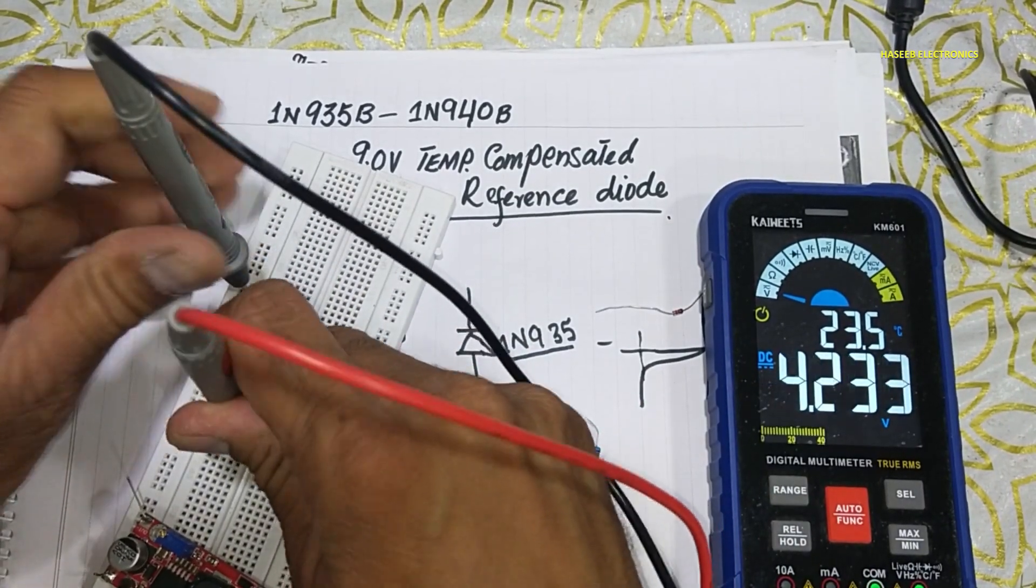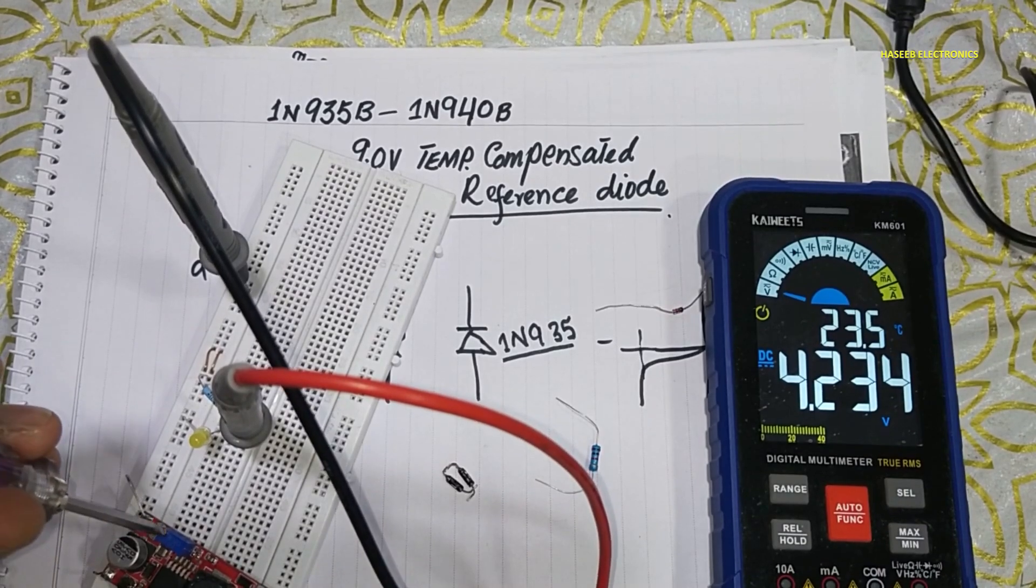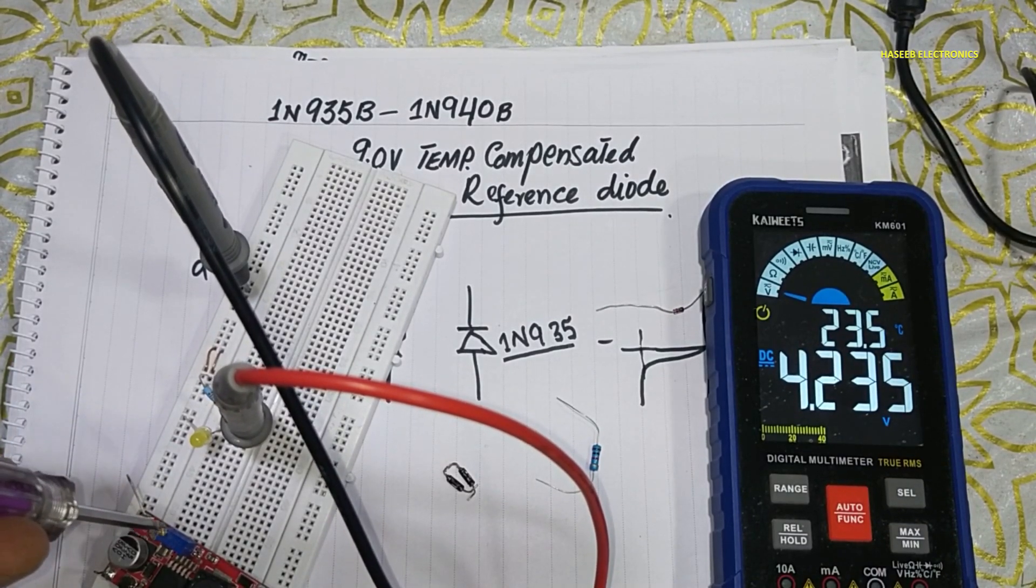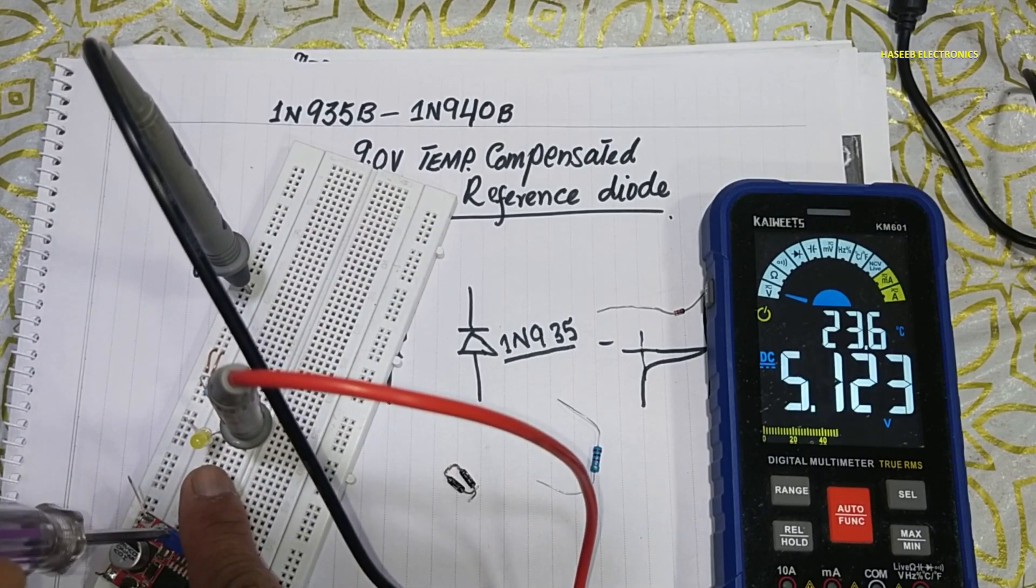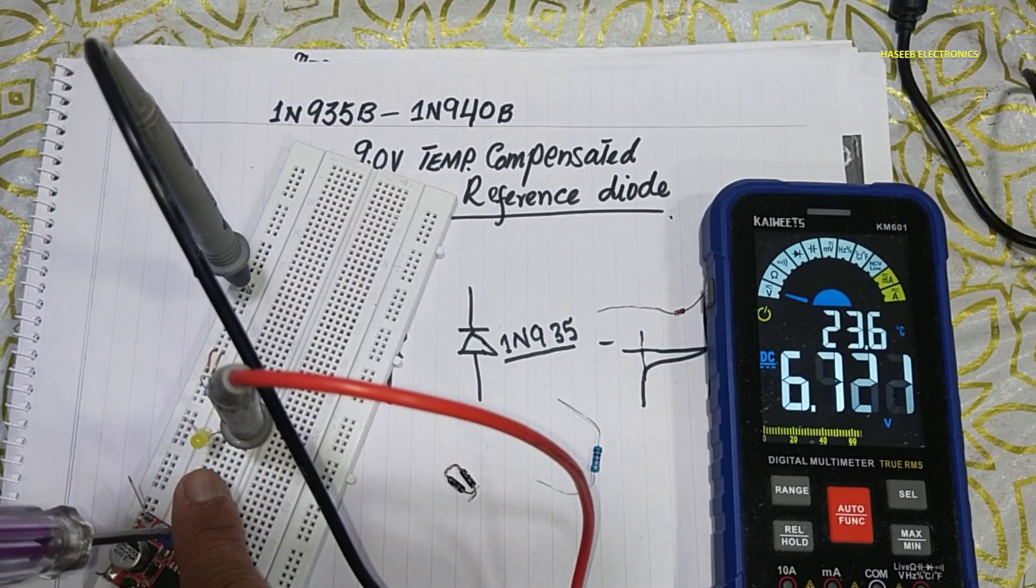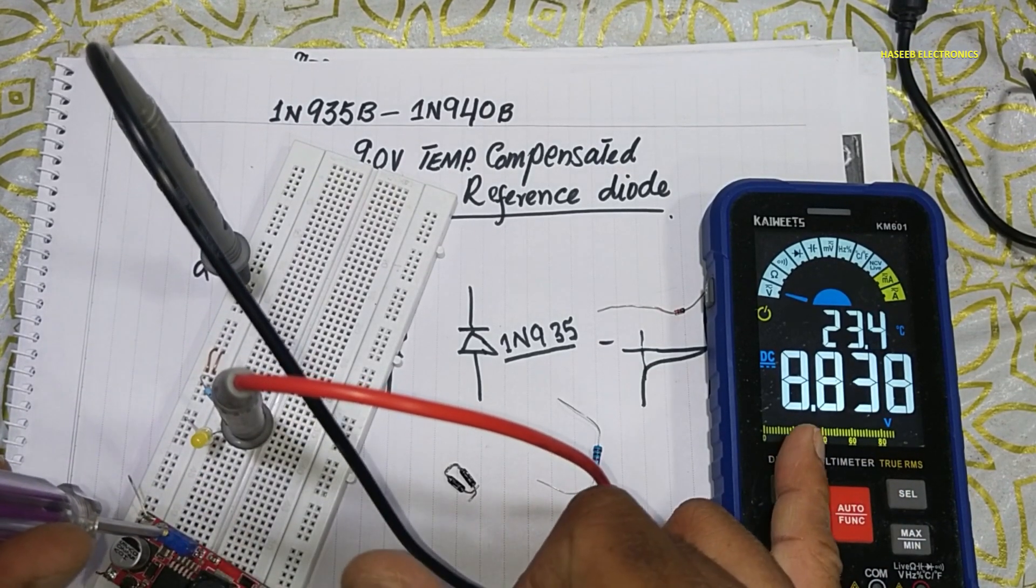Ground and positive here. 4.23 volts. Now I will increase the voltage. We can see there is no load current here. Now 6 volt, 7 volt, 8.8 volt.